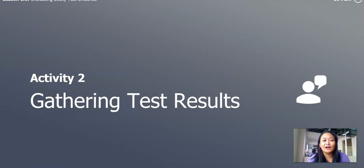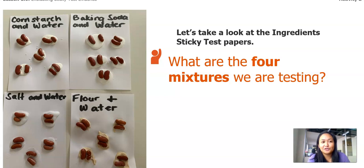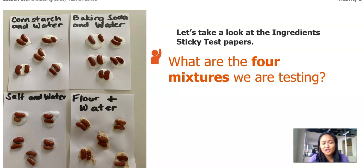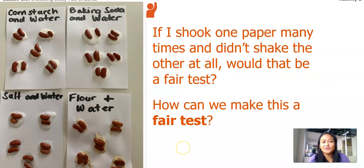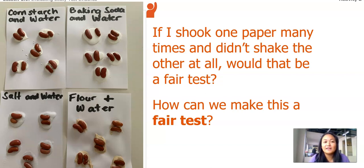Part of our lesson is we're going to gather our test results from the sticky test. I just showed you one with flour and water, but I did it the other day and let it dry. So if you could see on the left, you can see the picture of the four mixtures that we are testing: cornstarch and water, baking soda and water, salt and water, and flour and water. Now remember, we're going to shake all of these papers. But I'm wondering — if I shook one paper many times and didn't shake the other at all, would that be a fair test? How can we make this a fair test? I'm thinking that we should shake it all the same number of times. This time, we're going to shake it three times.